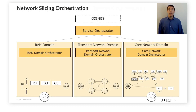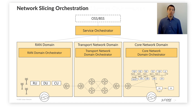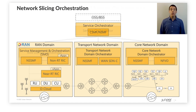Network slicing relies on hierarchical orchestration, where a multi-domain service orchestrator is responsible for end-to-end lifecycle management of the network slices. The slices are segmented for the various domains. Specialized domain orchestrators are responsible for a portion of slices in their respective domain — for example, in the RAN, transport network, or core network. Each domain has its own characteristics and specialized management system.